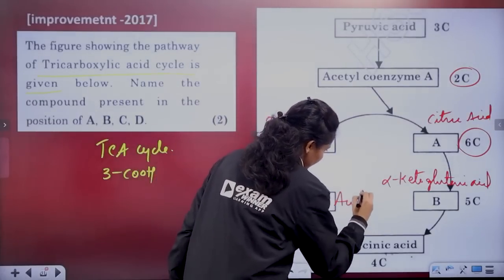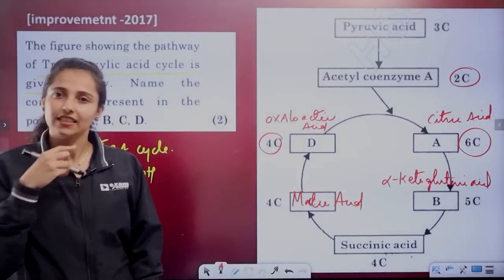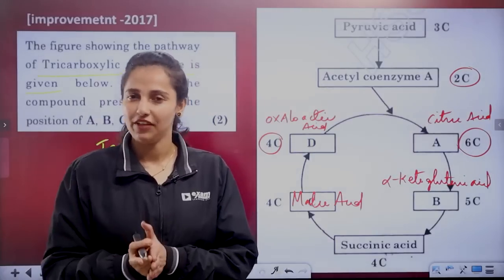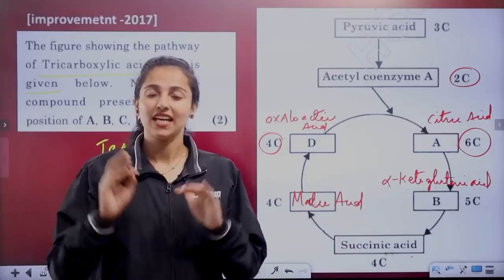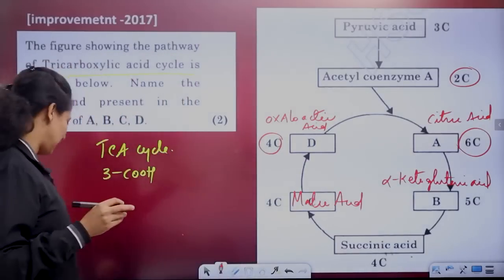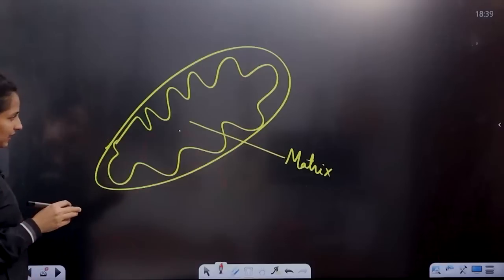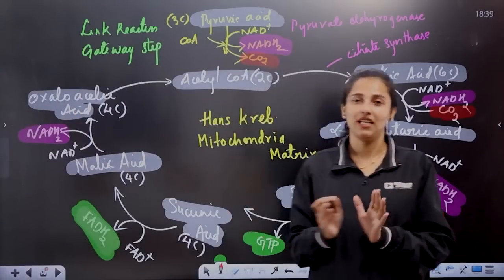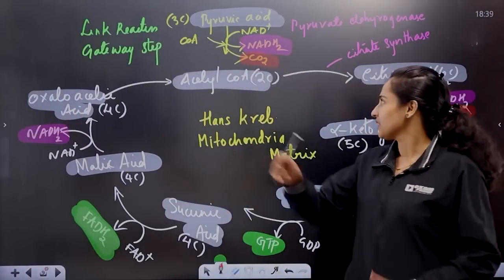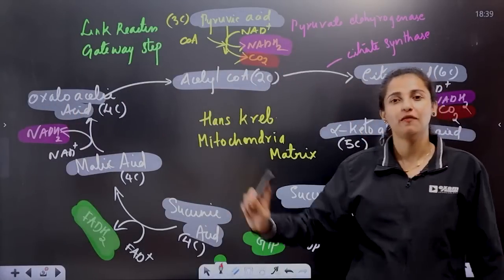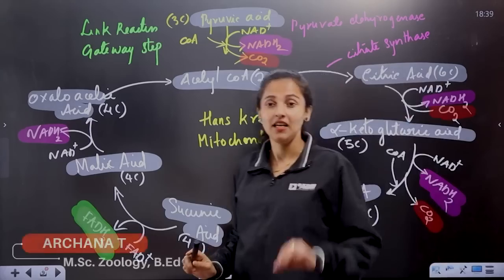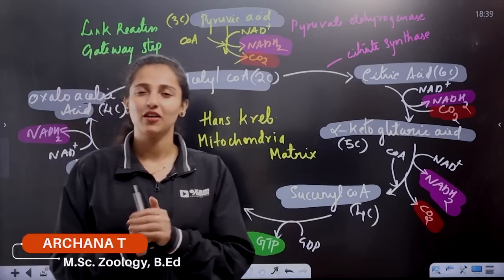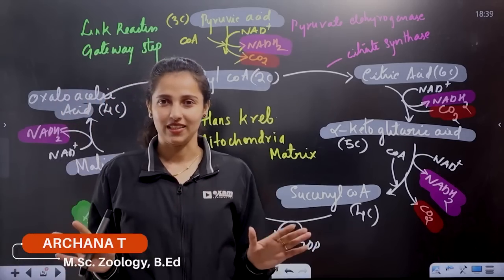To complete the picture: the Krebs cycle is the complete oxidation of pyruvic acid by the stepwise removal of hydrogen atoms, leaving three molecules of carbon dioxide. The cycle goes: pyruvic acid → Acetyl Coenzyme A → citric acid → alpha-ketoglutaric acid → succinyl Coenzyme A → succinic acid → malic acid → oxaloacetic acid.